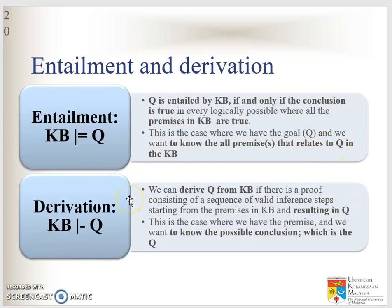Derivation: you derive Q — you get the theorem, you get the conclusion. You derive Q from the knowledge base if there is a proof consisting of a sequence of valid inference types. So you want to know all the possible conclusions, which is Q.